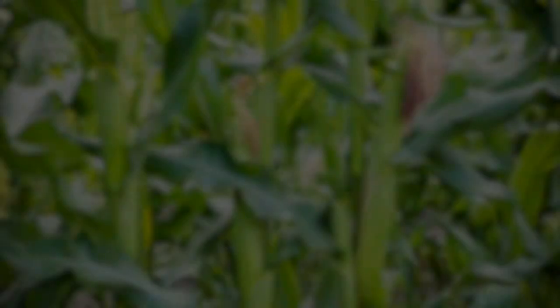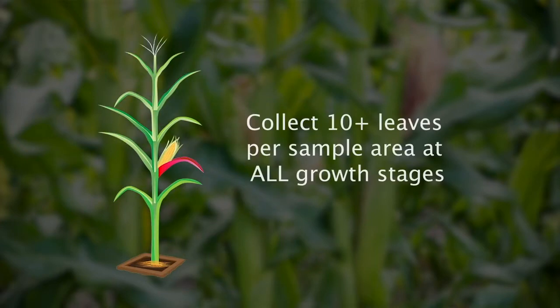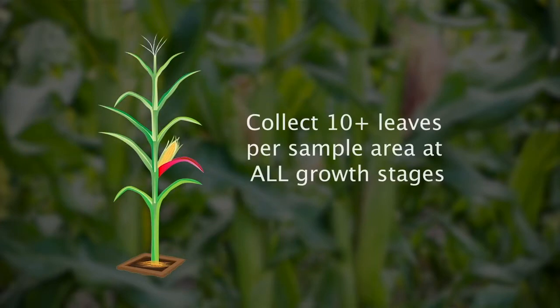In corn at reproductive stages, you should collect the ear leaf, which is the leaf immediately underneath the ear. This is because the plant begins sending nutrients out of the other leaves and into the ear at R1 and beyond. At all growth stages, you should collect at least 10 leaves per sample.